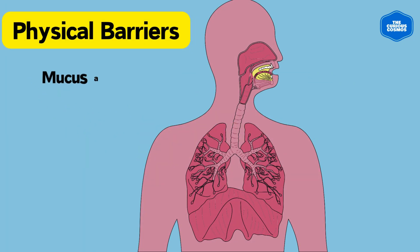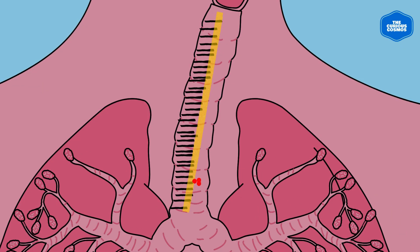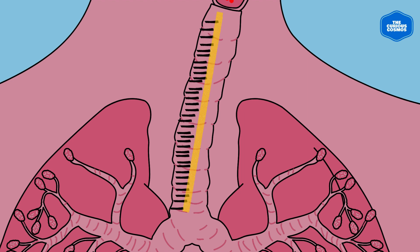Physical barriers — mucus and cilia: the upper airway is lined with a sticky layer of mucus produced by goblet cells. This mucus traps inhaled particles, including pathogens. Tiny hair-like structures called cilia line the airways and beat rhythmically, propelling the mucus upwards.